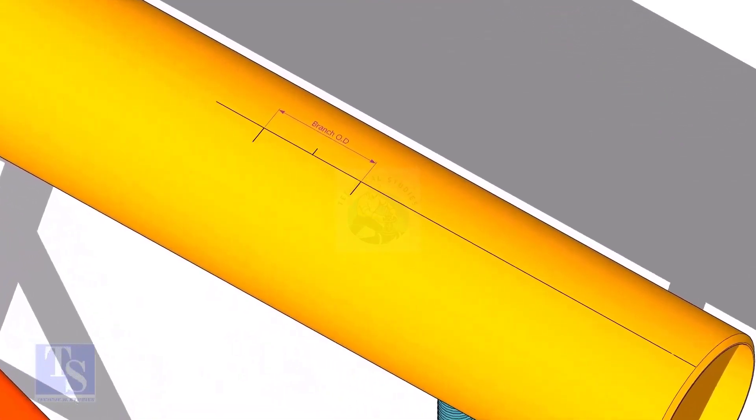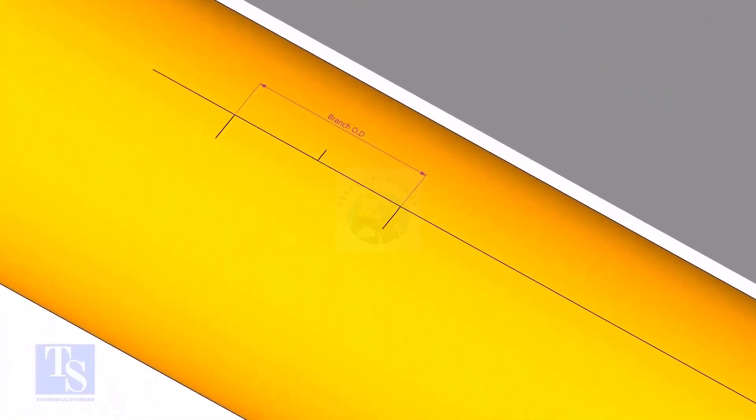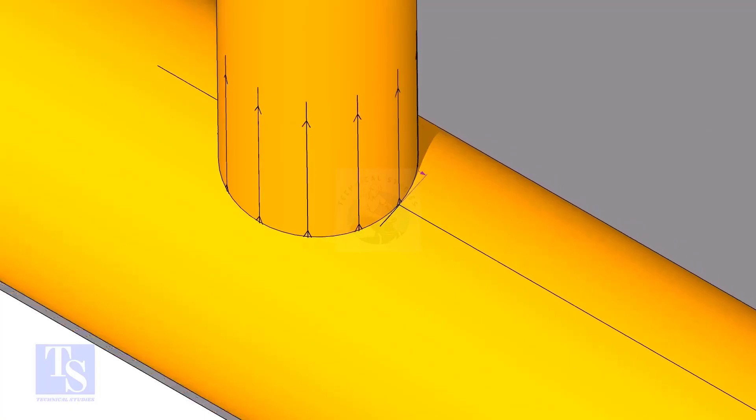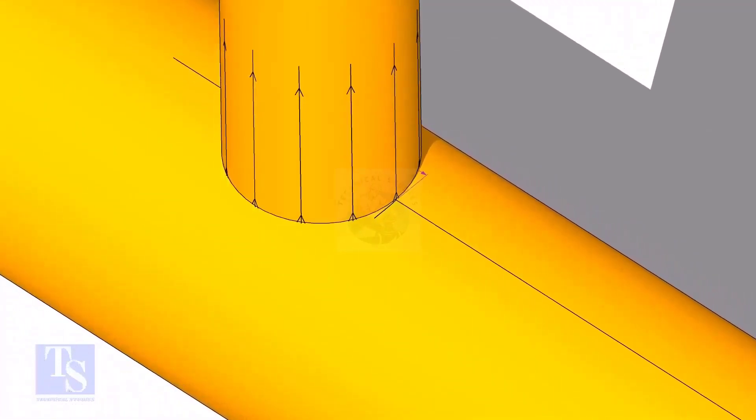Mark the branch OD on the center line of the header. Put the branch exactly on this marking, matching the branch center line.